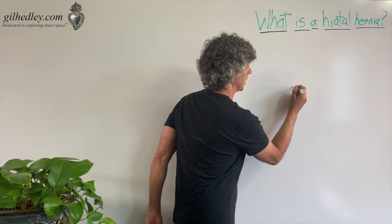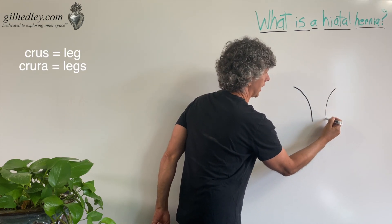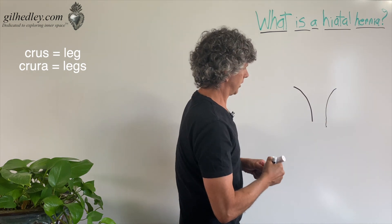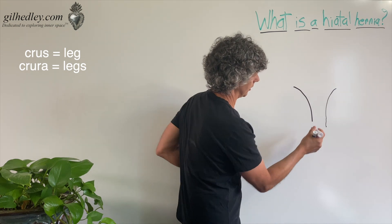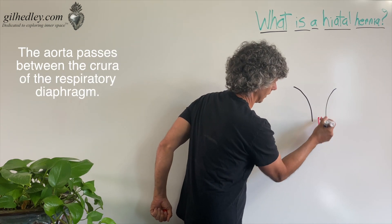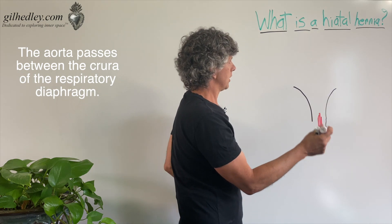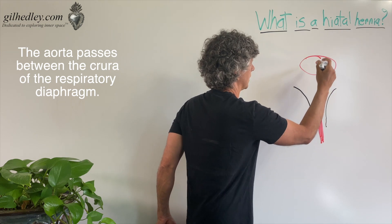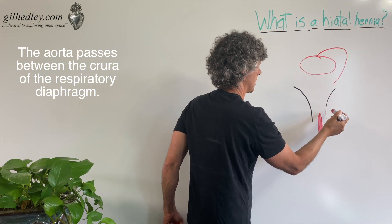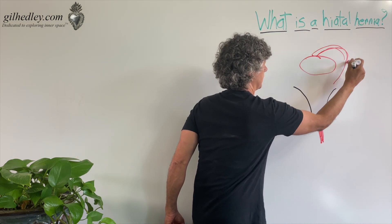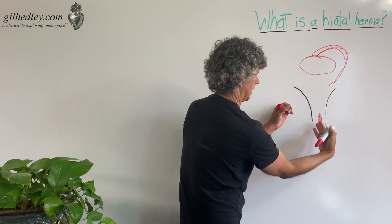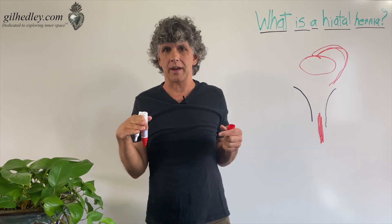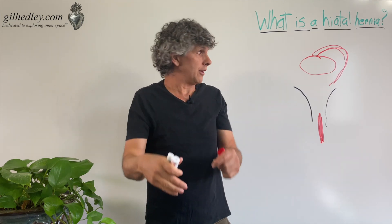Here's our diaphragm, and here are the crura — or the legs — of the diaphragm. Going right through the crura of the diaphragm is the aorta. The aorta is coming from the heart, which is sitting right on top of the diaphragm, sending off the aortic arch here, coming behind and then through the diaphragm. The aorta doesn't actually poke a hole in the diaphragm — it kind of goes underneath it.